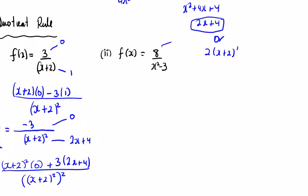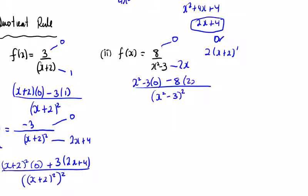Let's look at this one. Top differentiated, bottom differentiated, bottom to be squared: the bottom by the top differentiated, minus the top by the bottom differentiated. So we're going to get minus 16x over x squared minus 3 to be squared, which is dy dx.